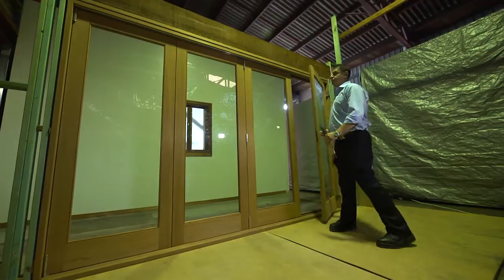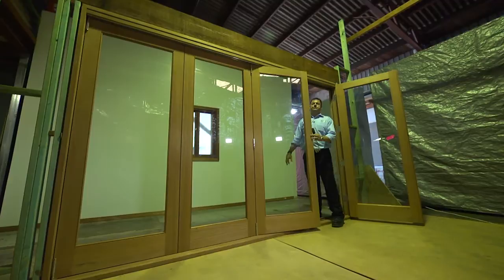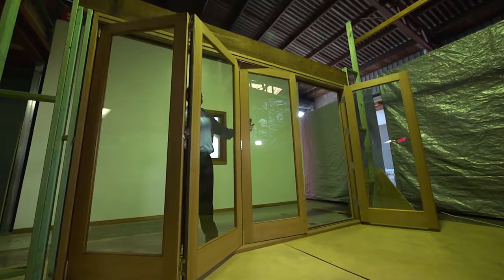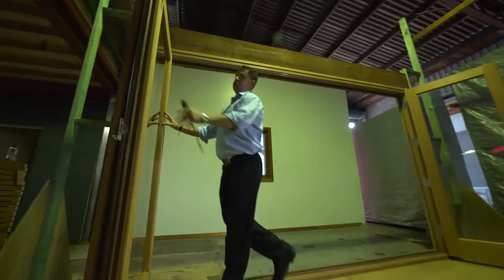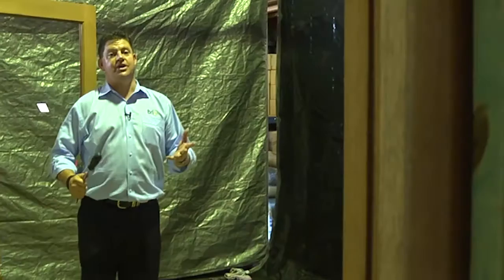From here now we need to check to make sure all our doors slide properly. To do this, we just reverse the process. And you'll notice that there's no binding or no grabbing of the bottom of the door onto the sill.